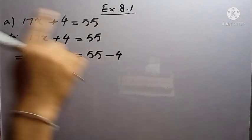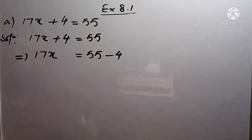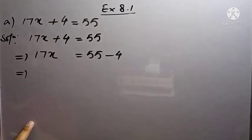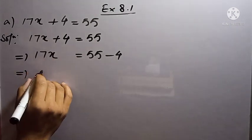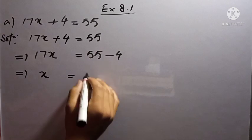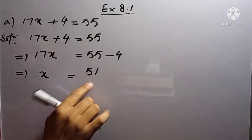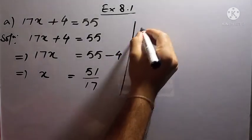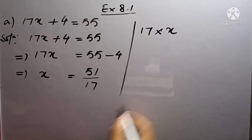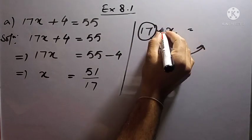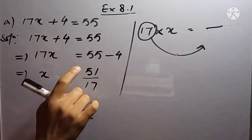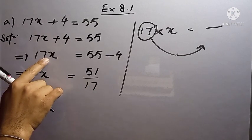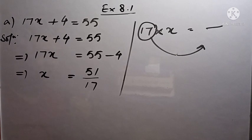Plus 4 will be changed into minus 4 because the sign has to be changed when a term goes from one side to another. So we have 17x equal to 55 minus 4, which is 51. Now this 17 will divide 51 — between 17 and x there is multiplication, so when 17 goes to the other side, multiplication is changed into division. That's why we divide 51 by 17. Don't forget: multiplication will be changed into division, and similarly, division will be changed into multiplication.